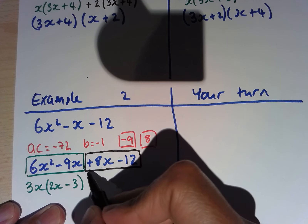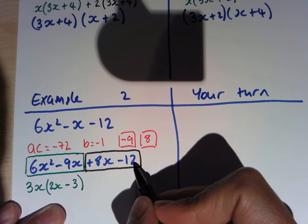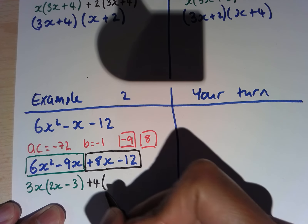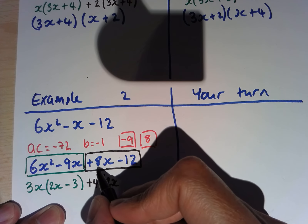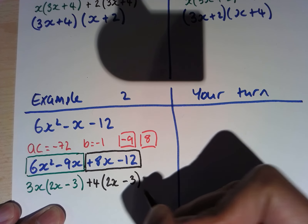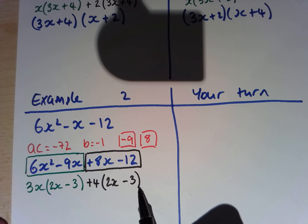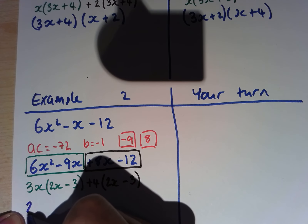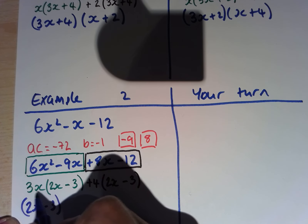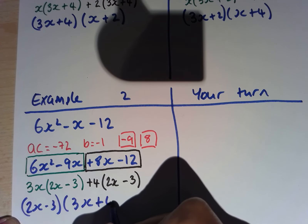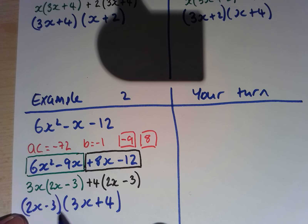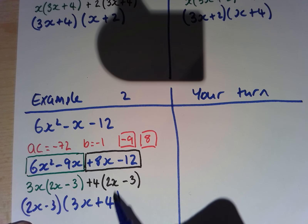Now we'll do this part: plus 8x take away 12. The highest common factor here is going to be 4, so we're going to have plus 4, and that's going to be 2x, and to give negative 12 that needs to be a negative 3. You'll notice that both bracket expressions are the same. Our common factor is now 2x take away 3, and we need to multiply that by 3x plus 4. As a check: 2x times 3x gives 6x squared; 2x times 4 is 8x; negative 3 times 3x is negative 9x; and 8x take away 9x gives negative x; negative 3 times 4 gives negative 12.